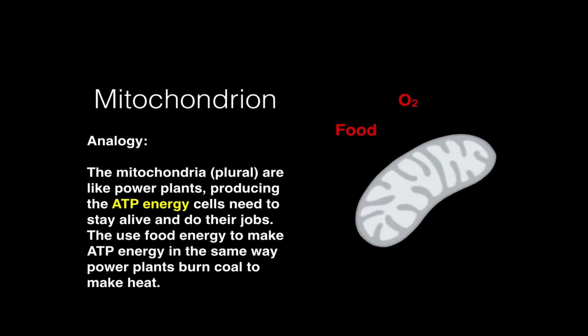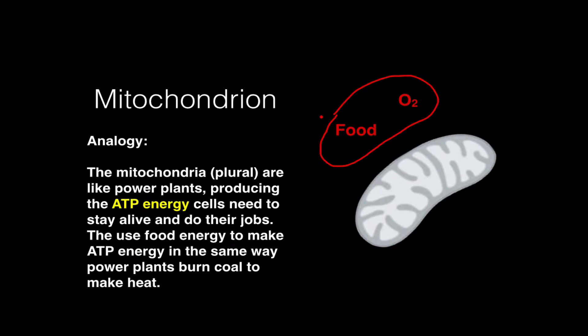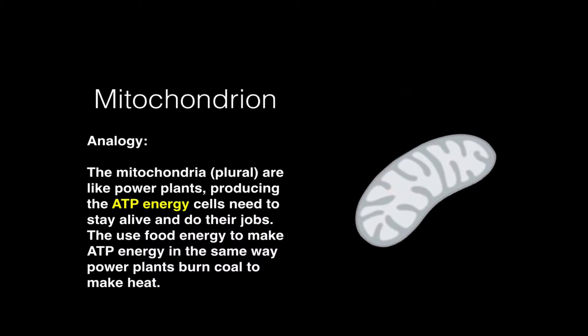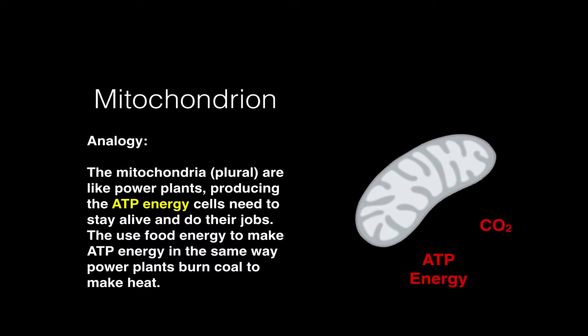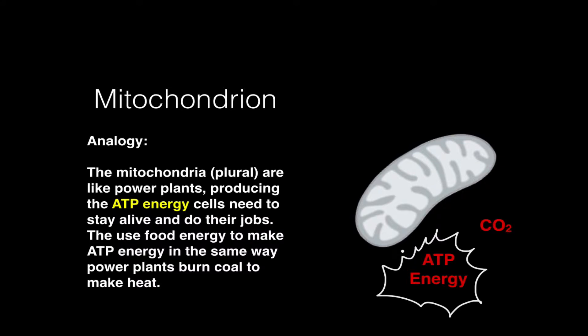So here we have the two things this mitochondrion needs to take in: food and oxygen. We're going to see them going into the mitochondria, and they're going to be converted into ATP energy and a waste gas called carbon dioxide, which are going to leave the mitochondria. The mitochondria is an energy converter or transformer because it transforms food energy into ATP energy, which is the most important product that a cell needs from second to second to stay alive.